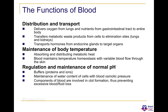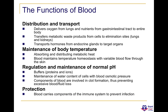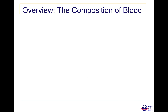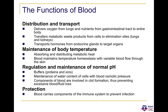So what is the function of blood? The functions of blood start off with distribution and transport — it basically delivers oxygen from the lungs and nutrients from the gastrointestinal tract to the entire body, specifically to the respiring cells. It also transfers metabolic waste from cells to elimination sites such as the lungs and kidneys, and it transports hormones from endocrine glands to target organs.